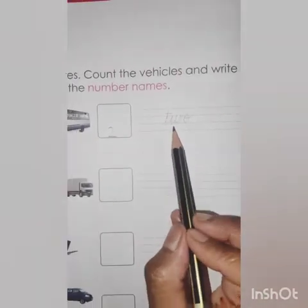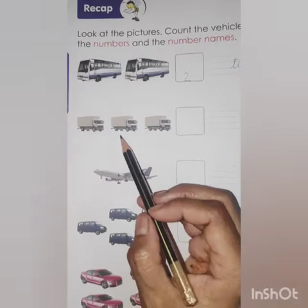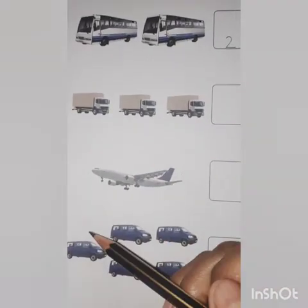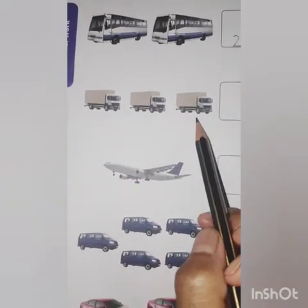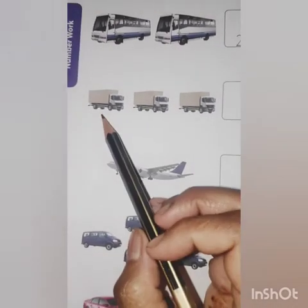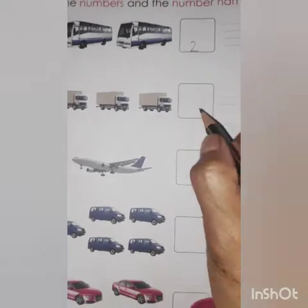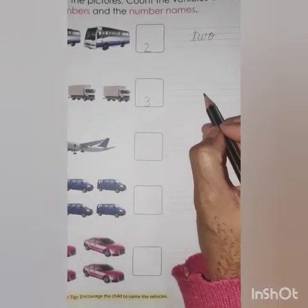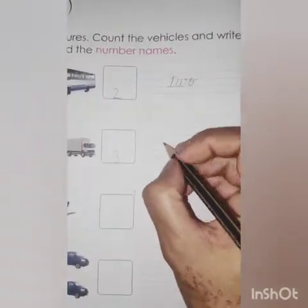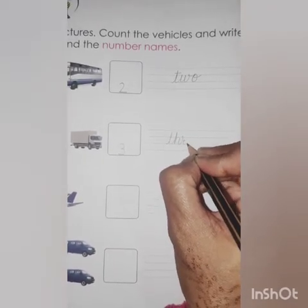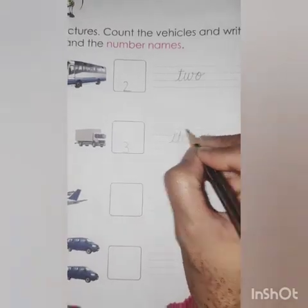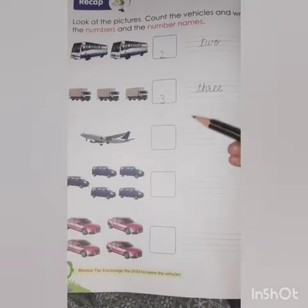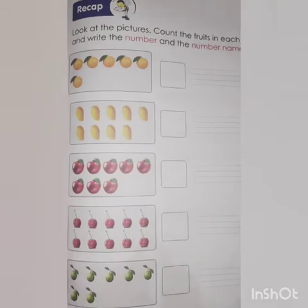Cross the T. T, W, O — 2. Same way. Now tell me, what are these? These are trucks. How many trucks are there? 1, 2, 3. Write down number 3. And here the spelling of 3: T, H, R, E, E. Cross the T. So kids, this way you have to do this page.